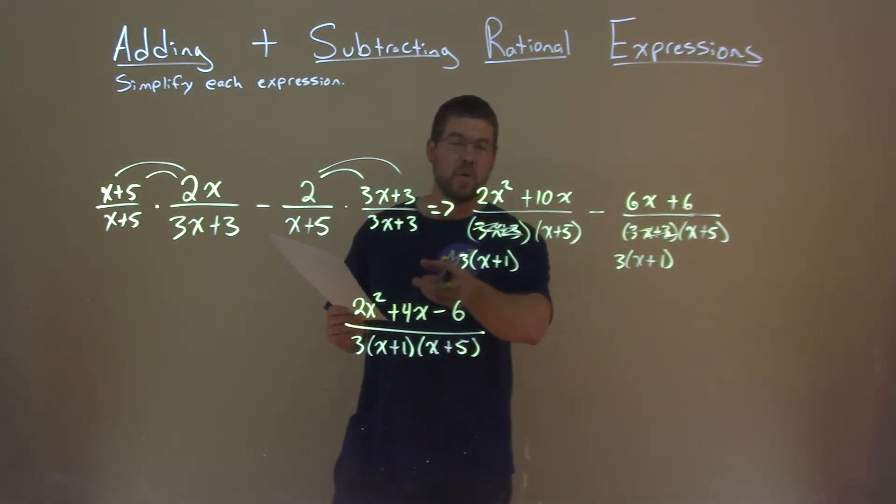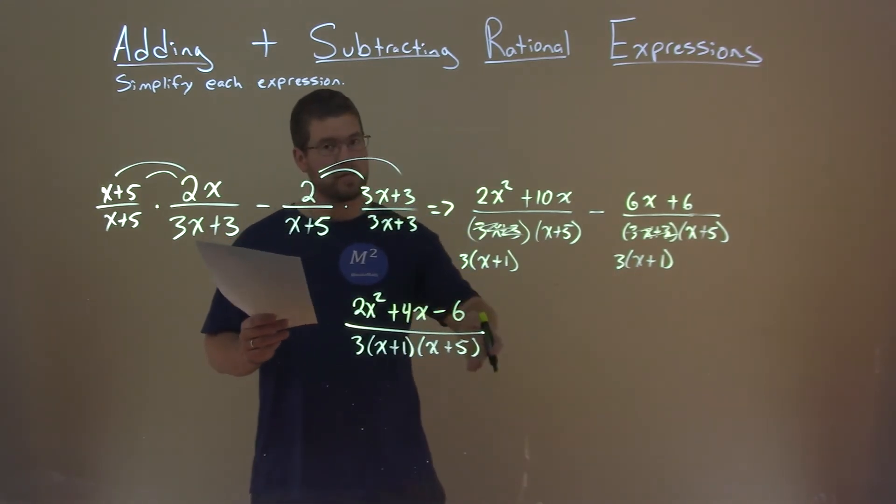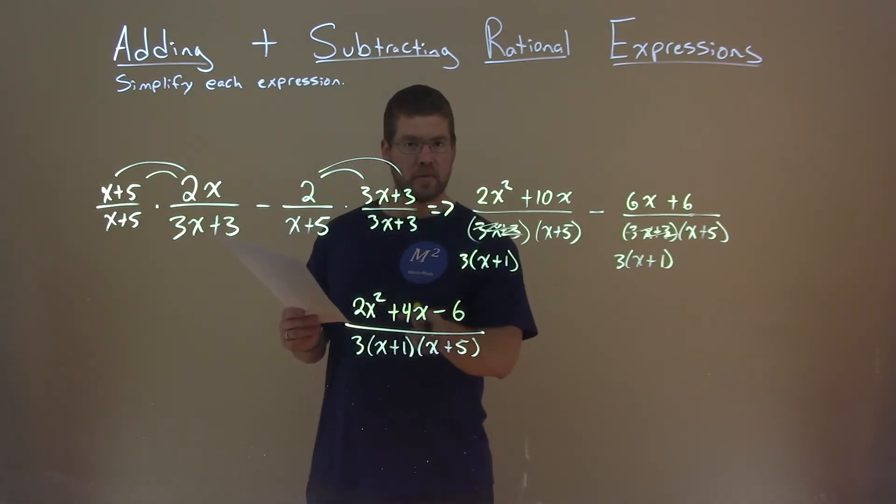And there we have it. 2x squared plus 4x minus 6 divided by 3 times x plus 1 times x plus 5 is our final answer.